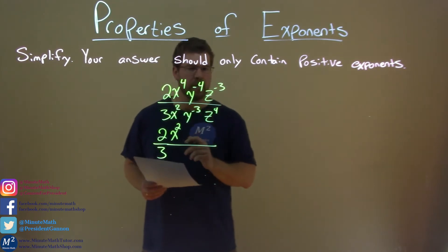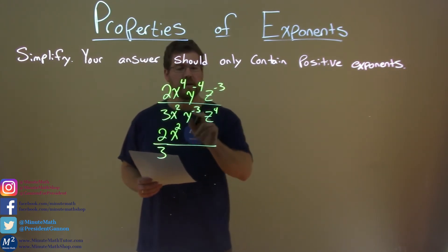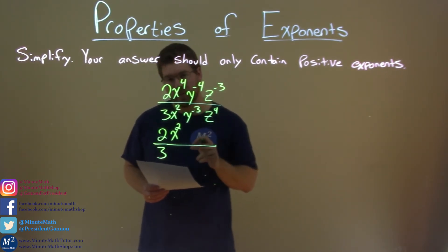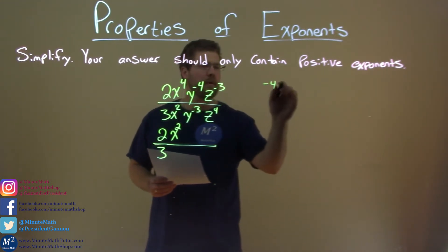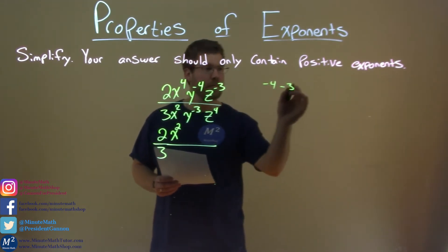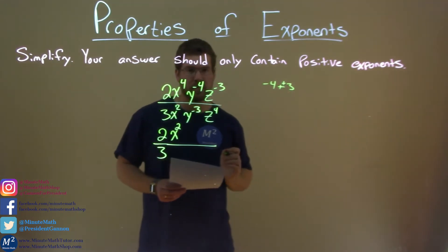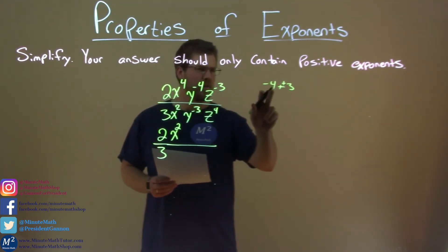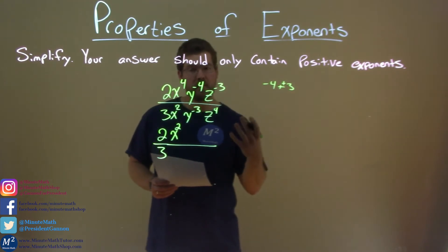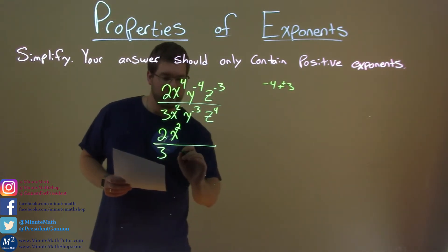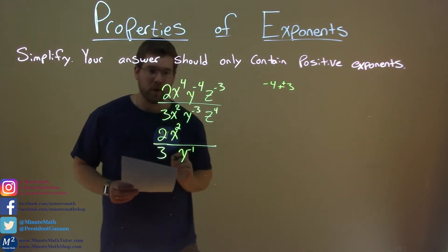Now the y's, this is the tricky part. y to the negative 4th divided by y to the negative 3rd. Negative 4 minus the negative 3rd, we subtract them, is like adding a positive 3, right? So, negative 4 plus 3 is a negative 1, that means the y is going to be in the denominator, negative 1 right there.